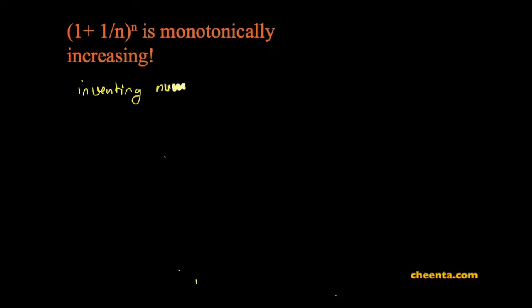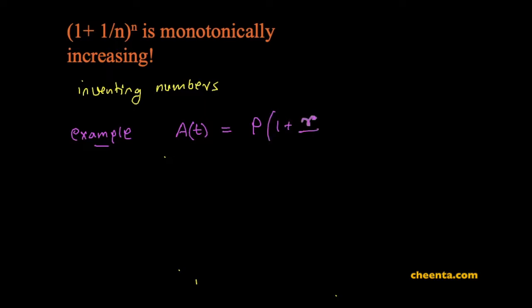Recall that we were inventing numbers, and this is one of the reasons we are excited to study real analysis. As an example, we talked about the banker's formula — the compound interest formula — which gives you the amount when you invest P dollars or rupees into a bank with a rate of interest R, number of times compounded n, for T years of investment.